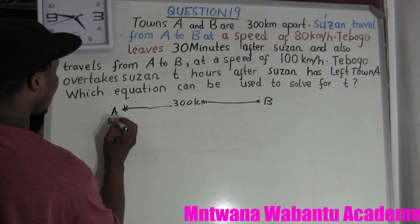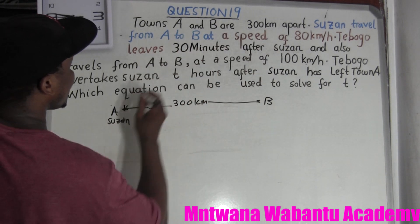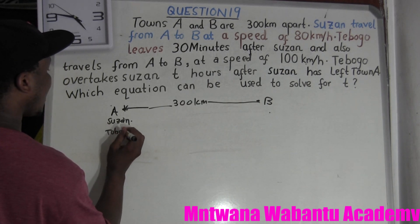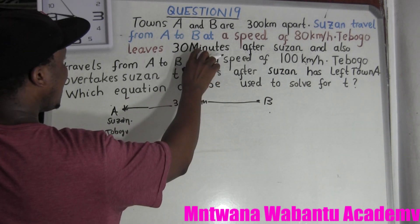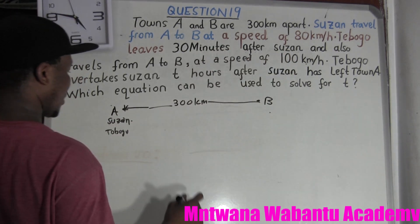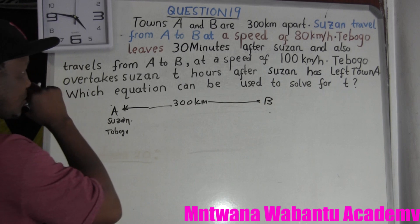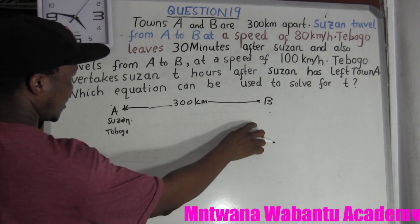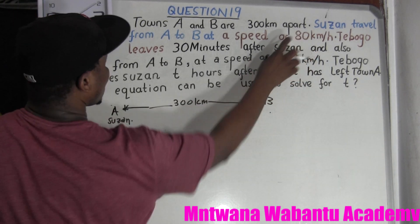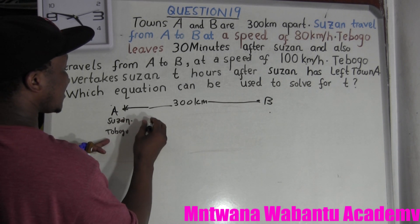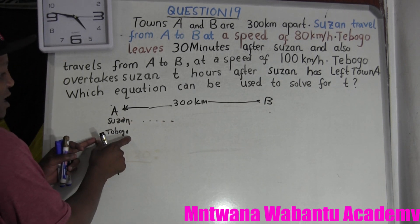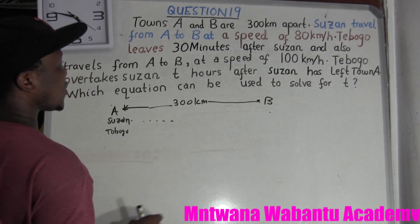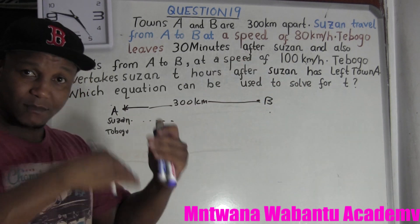They say Susan travels from A to B. So we have a speed for Susan. Also, Teboho leaves three minutes after Susan. Teboho also traveled from A to B, but his speed is bigger than Susan's. So it's obvious — if Susan goes slow and Teboho leaves a little late but is going faster, he's going to possibly overtake Susan.